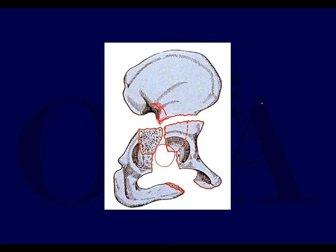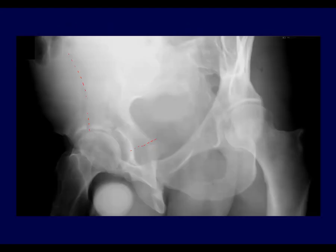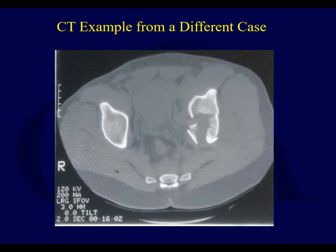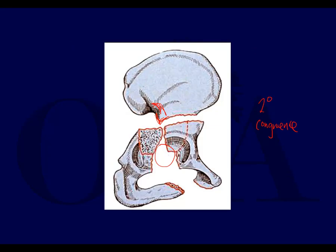Occasionally you can get something called secondary congruence, which is only seen with an associated both column fracture. Because all the fracture fragments are free floating and nothing remains attached, as opposed to what we typically see with the femoral head displacing medially, with an associated both column fracture all those fracture fragments can travel with the head. Because they're free, a broken-off piece can reorient itself and articulate congruently with the femoral head — that's secondary congruence. It can only happen with an associated both column fracture, though it certainly doesn't always happen.